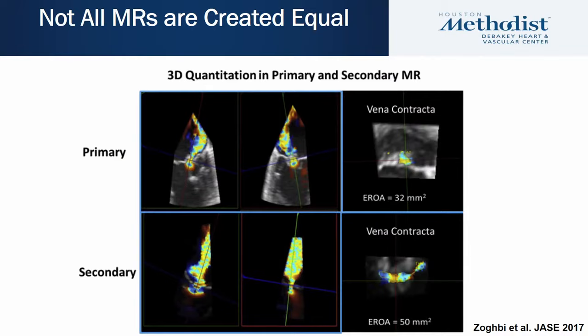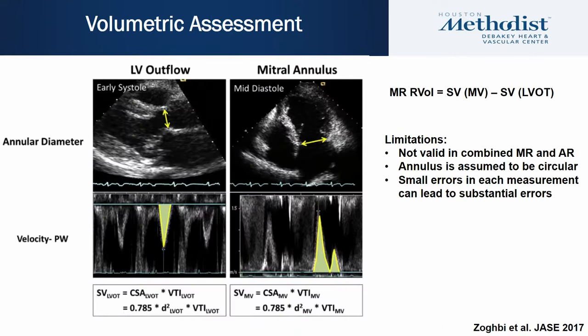3D evaluation of the vena contracta shows a difference between primary and secondary MR — the vena contracta is more circular in primary MR and more elliptical in secondary MR. Volumetric assessment is also helpful — one method involves subtracting LVOT stroke volume from the stroke volume through the mitral valve annulus to get the mitral regurgitant volume. A limitation is that it's not valid when combined MR and AR are present, and assumes a circular mitral valve annulus.